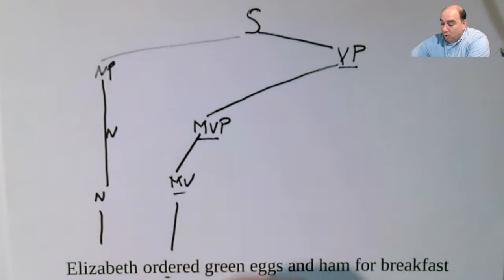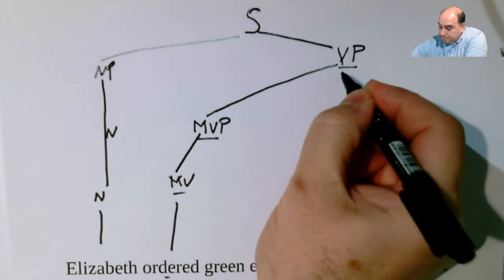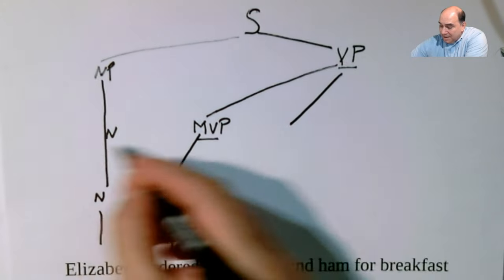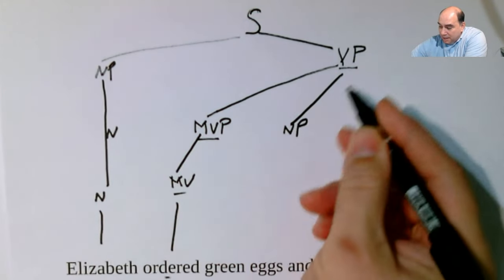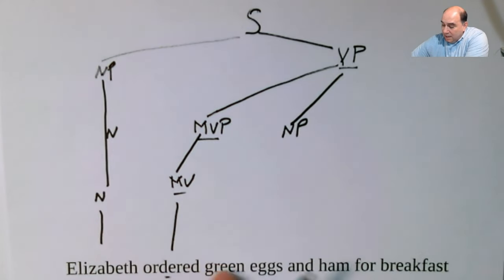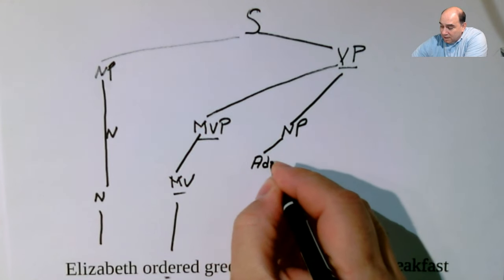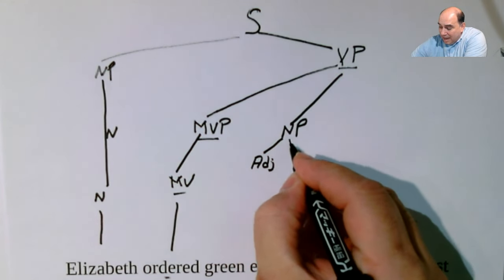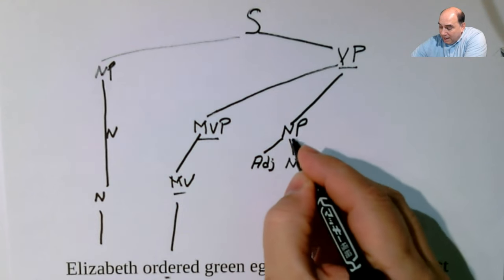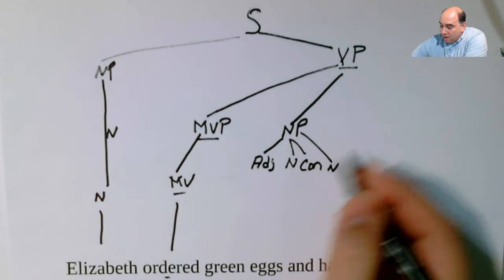So remember, as you do this, you're always going to have that structure. 'Green eggs and ham' — well, that's a noun. So off of here, I'm going to put another noun phrase at the same level. A verb phrase can include a noun phrase. This noun phrase has green eggs and ham. I have an adjective listed here, and I have a noun, and I have a conjunction, and another noun, and they all go together here.